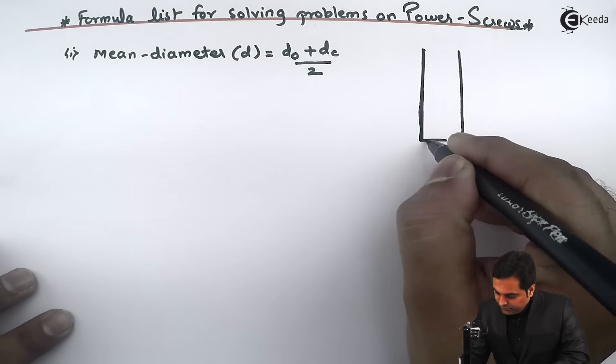And mean of that. This mean diameter is denoted by small d. So this mean diameter will be equal to Do plus Dc by 2. And another formula is D equals Do minus pitch by 2.